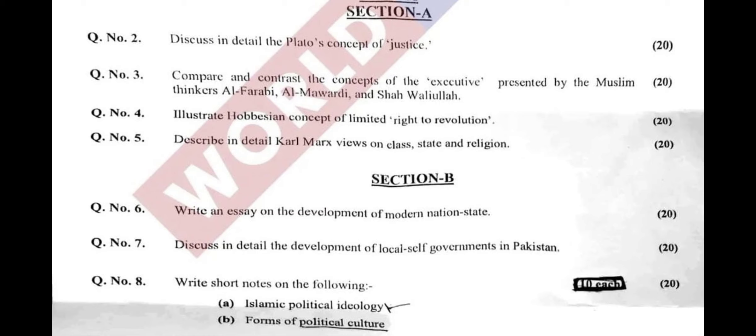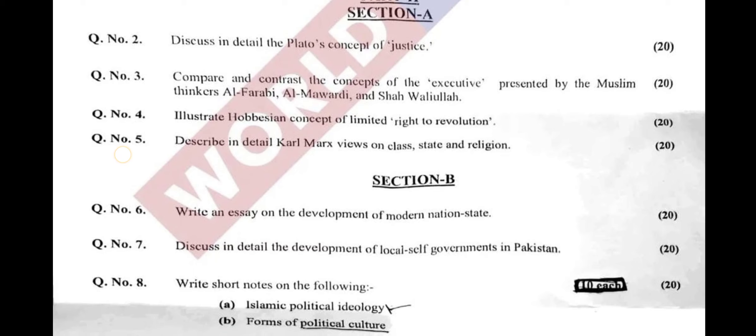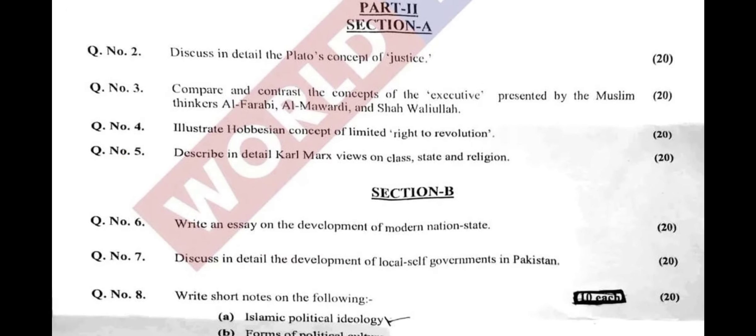Section A has very easy questions. The first question is: discuss in detail Plato's concept of justice. Question No. 3 is: compare and contrast the concepts of executive presented by Muslim thinkers Al-Farabi, Al-Mawardi, and Shah Waliullah.